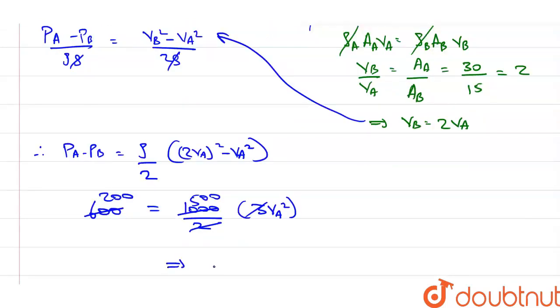This implies V_A will be equal to square root of 200 by 500, which equals root 4 by 10, equal to 0.4 root meter per second.